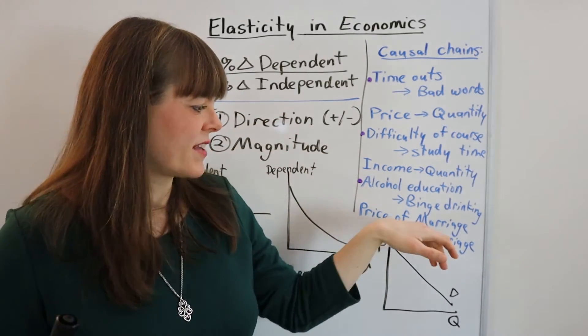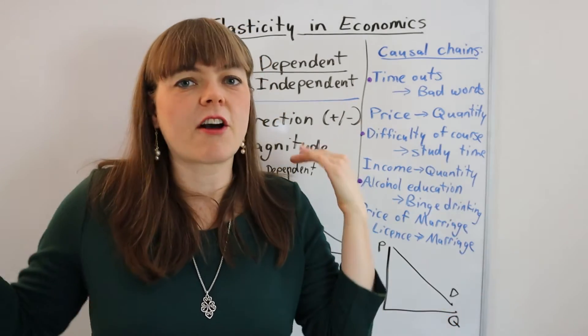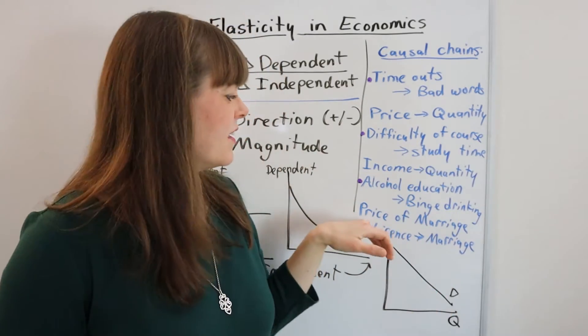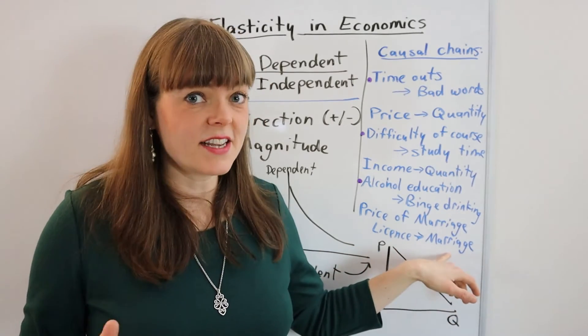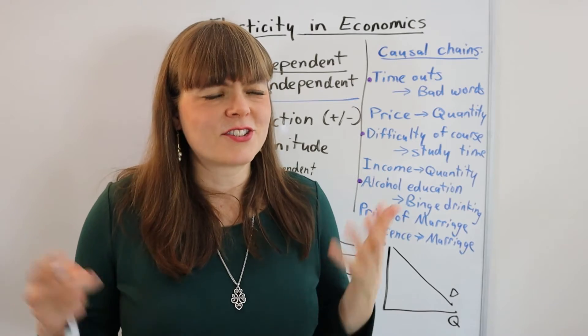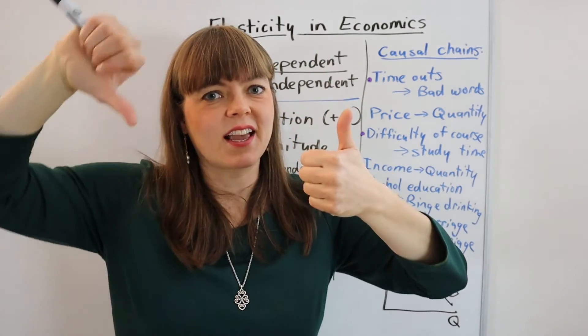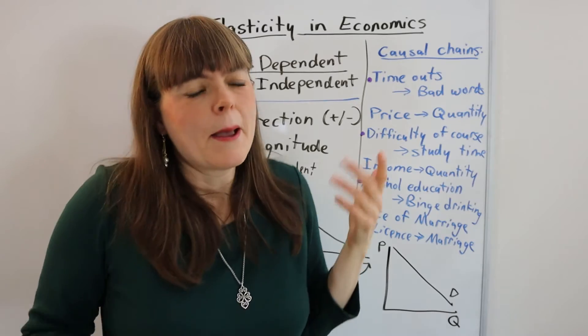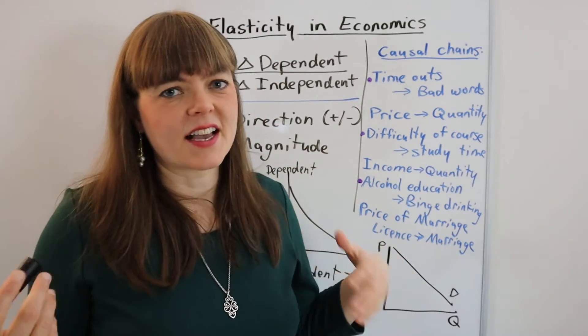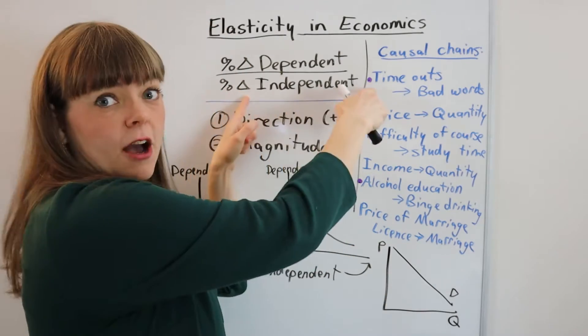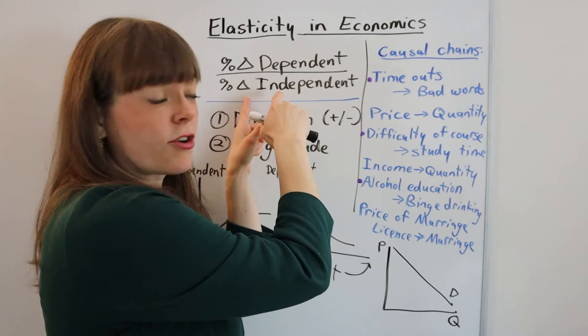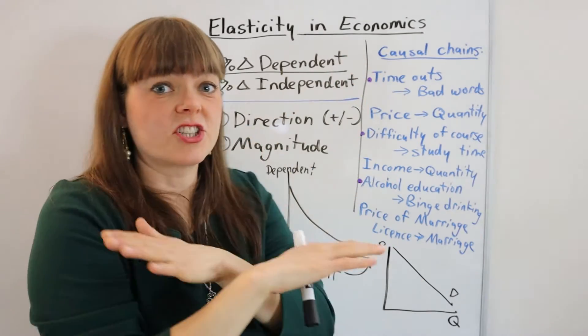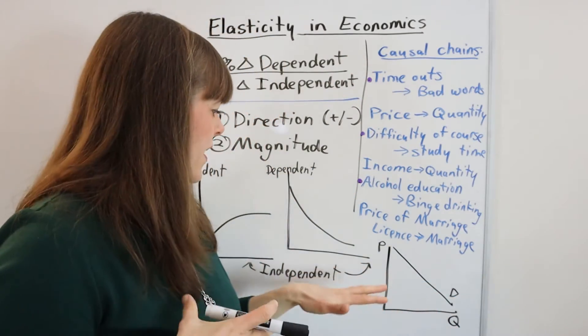If you increase the price of a marriage license from $20 to $25, or even from $20 to $40, that's a 100% increase in the price of a marriage license. How much does that decrease marriages in your state? You might think theoretically there's a negative relationship between price and quantity purchased, like number of marriages. So theoretically it follows the law of demand. But in fact, this is basically perfectly inelastic. That elasticity is zero. You increase the denominator, the price of a marriage license, by 100% from $20 to $40, the number of marriages in the state, the number of people purchasing that license, does not change whatsoever.